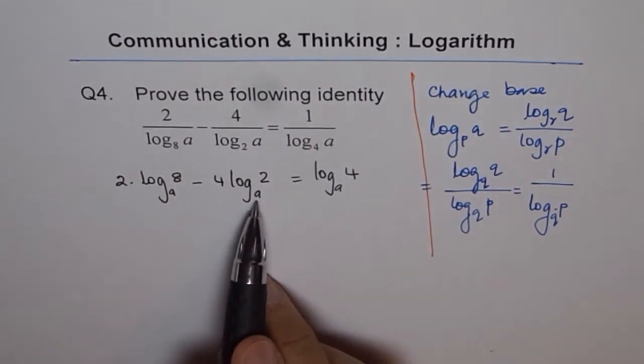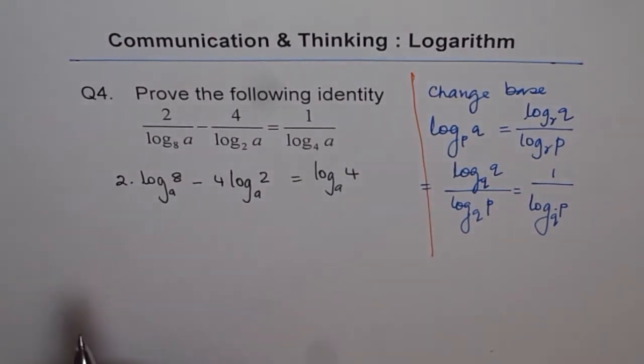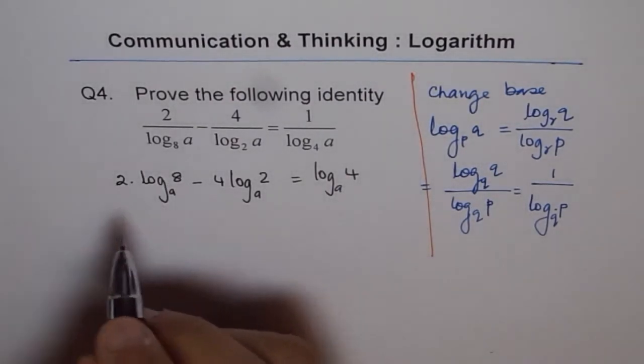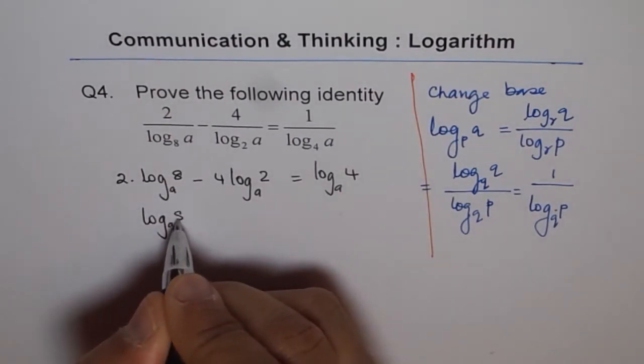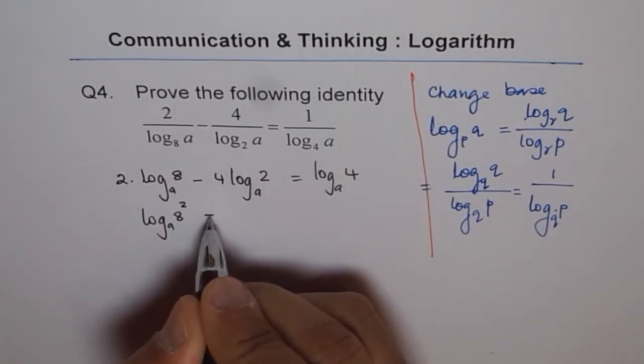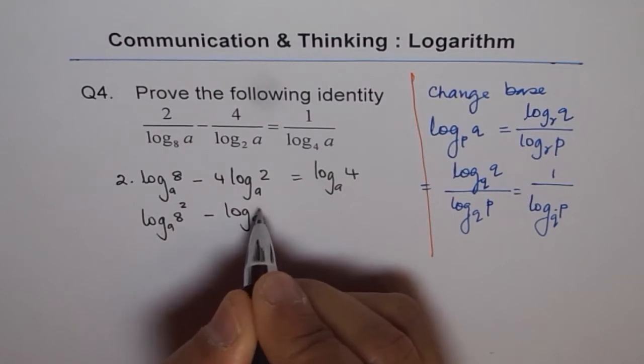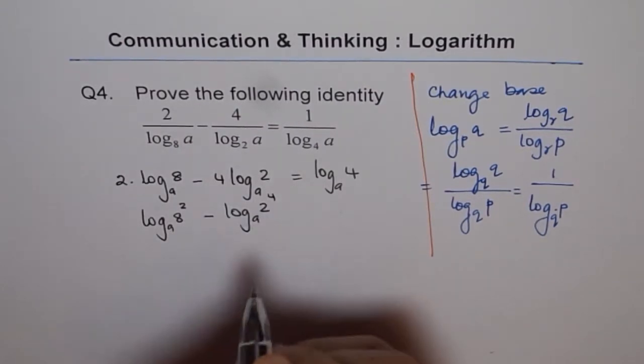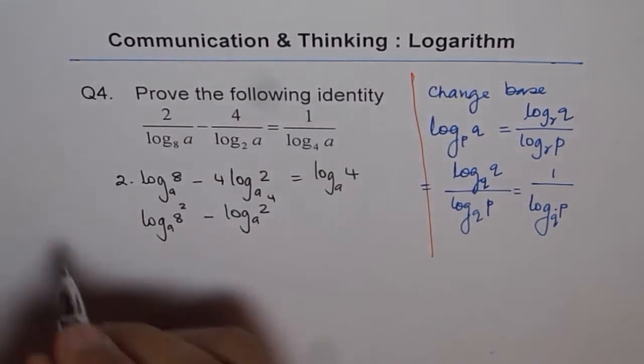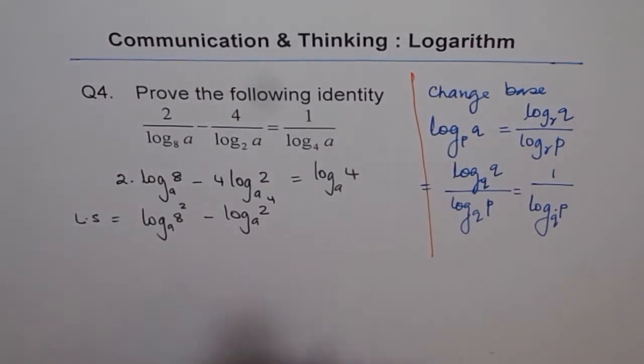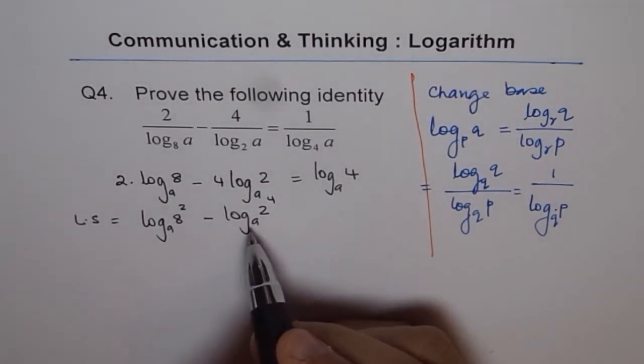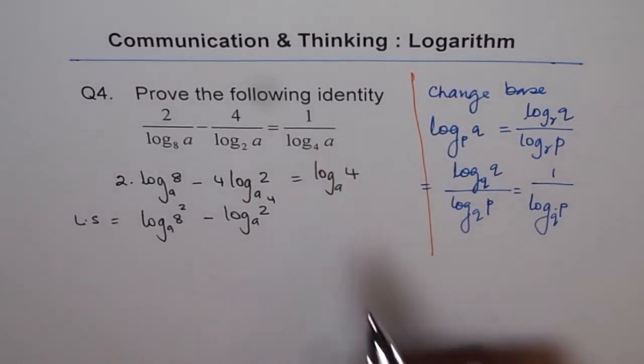Now since we have the same base, we can apply the logarithmic laws. So first we will apply power law which is log A 8 square minus log A 2 to the power of 4. So let's go with the left side first and see what left side equals, and then we will prove that to the right side. Then it's an identity.